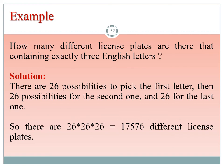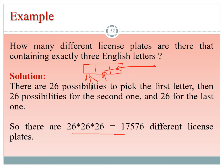Counting principle application examples: How many different license plates contain exactly three English letters? Each of the three positions has 26 possible letters, so the total number of different license plates is 26 × 26 × 26 = 17,576. For a sequence of any four non-zero digits with repetition allowed, each position has 9 possibilities, giving 9 × 9 × 9 × 9 arrangements. Without repetition, the count is 9 × 8 × 7 × 6.